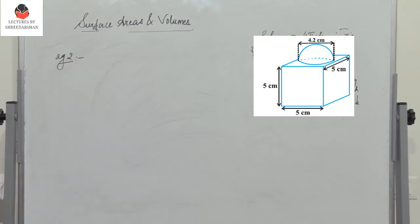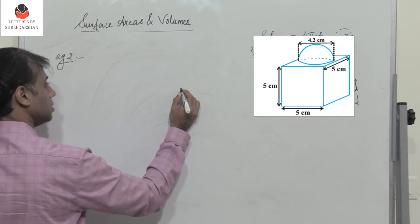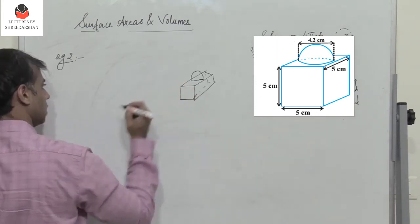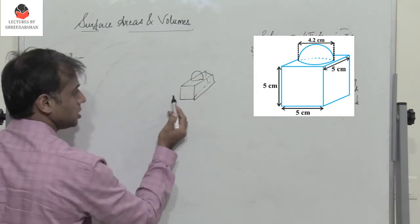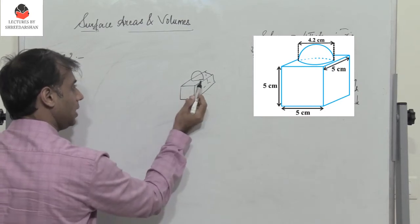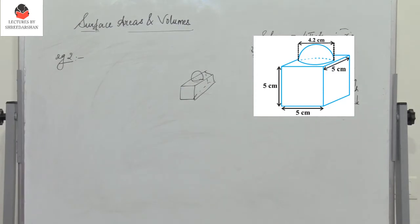Example 2: a decorative block has a cube and a hemisphere, and we need to find the total surface area of the block. The total surface area is the total surface area of the cube plus the curved surface area of the hemisphere, but then we need to subtract the base area of the hemisphere — because the hemisphere sits on top of the cube.